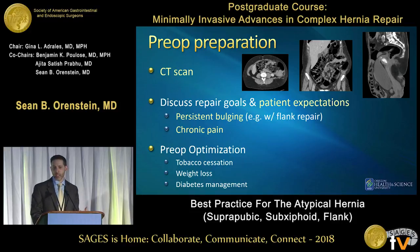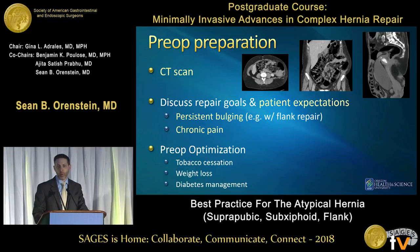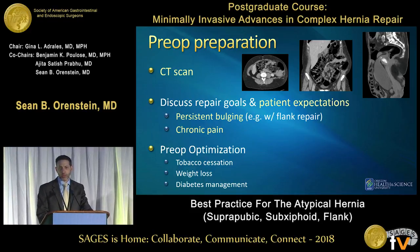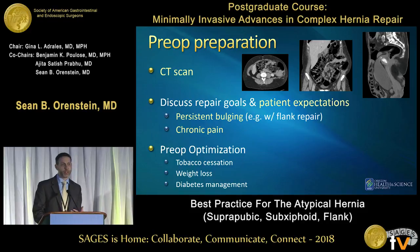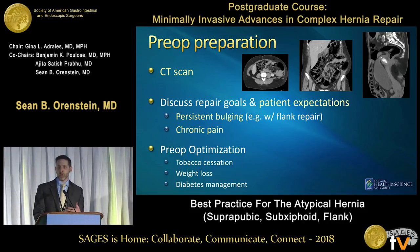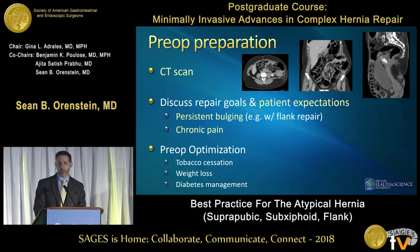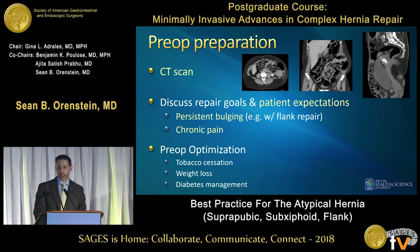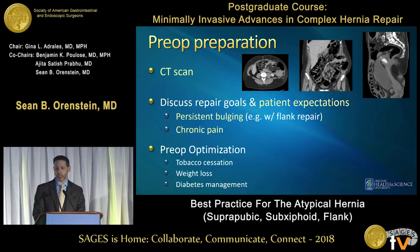Part of getting these repaired successfully is the pre-op preparation: looking at the CT scan, evaluating not only the size of the defects but how much soft tissue and fascia we have around it for fixation. An important thing is your discussion with the patient to set expectations, because while fixing a midline or central ventral hernia can be relatively straightforward, there are some potential outcomes that can be challenging — chronic pain, persistent bulging especially in flank hernias, de-innervation, and laxity of the tissues. Pre-op optimization is essential before embarking on these complex operations.